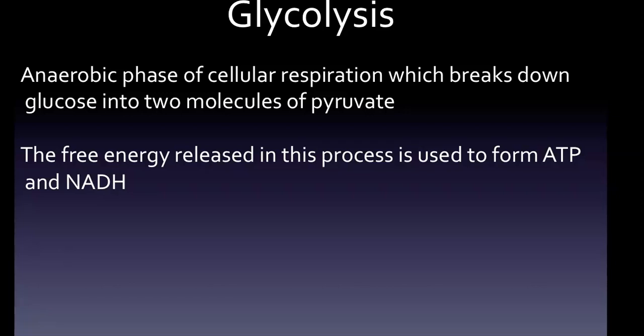Glycolysis is the anaerobic phase of cellular respiration which breaks down glucose into two molecules of pyruvate. Glycolysis is the metabolic pathway that converts glucose into pyruvate and a hydrogen ion. The free energy released in this process is used to form ATP and NADH. Glycolysis is a sequence of ten enzyme-catalyzed reactions.